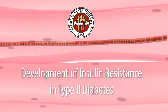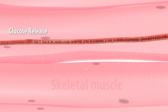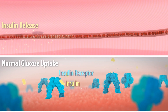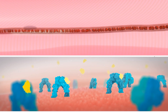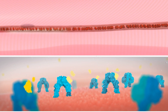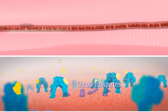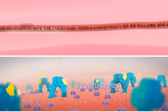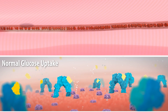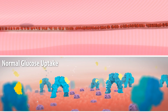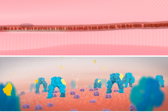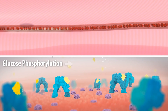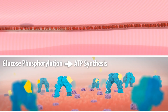Insulin facilitates glucose transport into cells. Insulin receptors bind insulin and initiate a series of events causing glucose transporter expression and translation. These transport proteins migrate to the cell surface, allowing glucose to enter the cells. Once intracellular, glucose molecules undergo phosphorylation in order to make ATP for metabolic use.